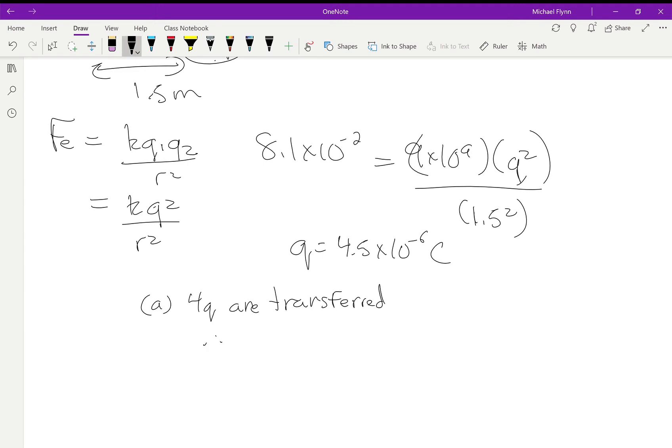So for question A, 4q are transferred. Therefore, the charge transferred is equal to that number, 4.5 times 10 to the negative 6 times 4, and I get 1.8 times 10 to the negative 5. But they're saying how many electrons?